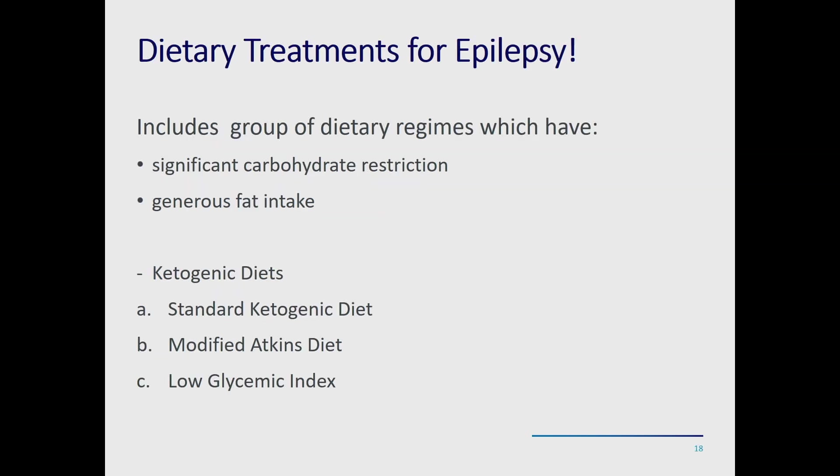If medications are not working, there are dietary therapies. These all have something in common: significant carbohydrate restriction and generous fat intake. They are collectively referred to as ketogenic diets — the standard ketogenic diet, the modified Atkins diet (used as a medical treatment), and the low glycemic index diet.